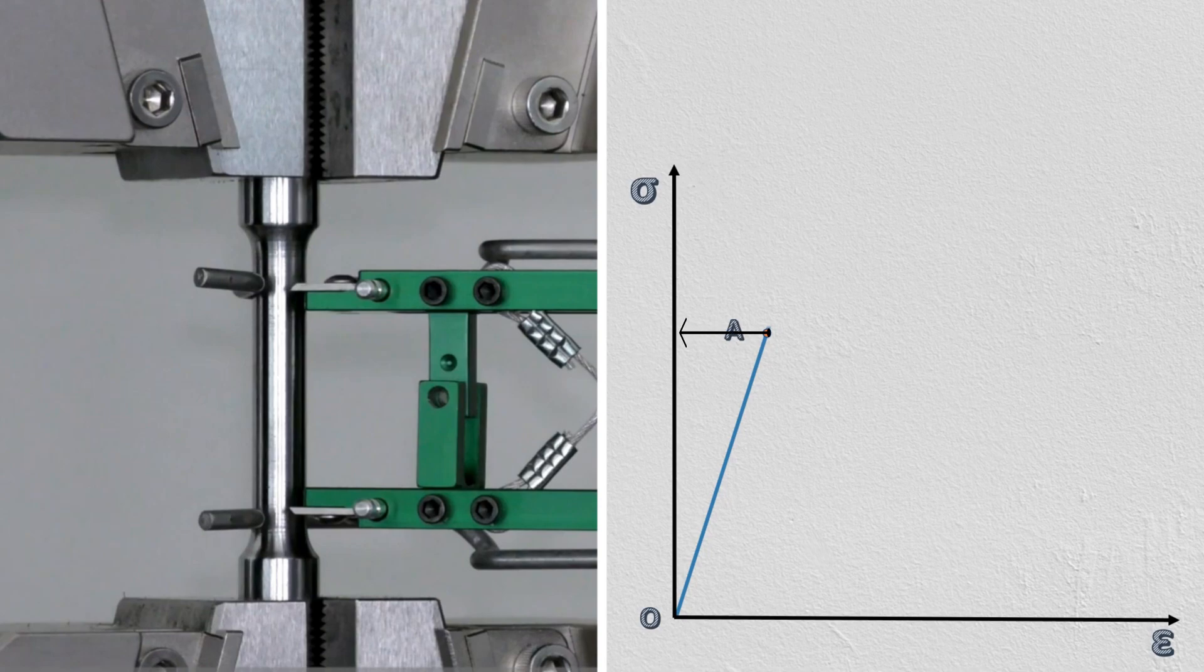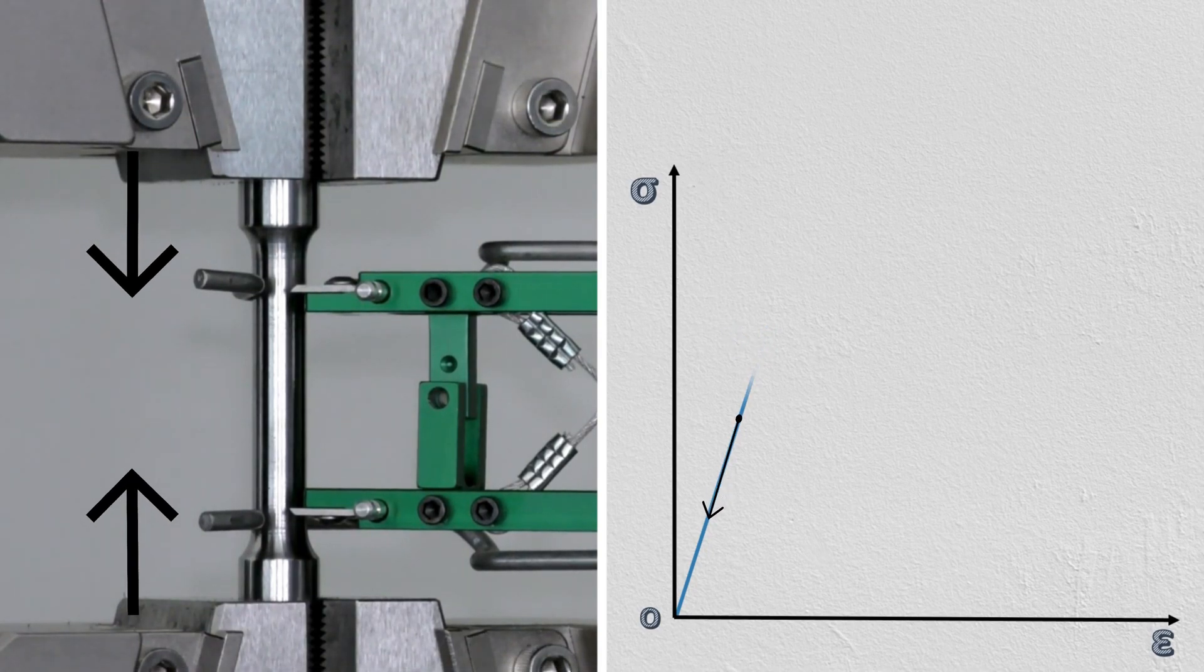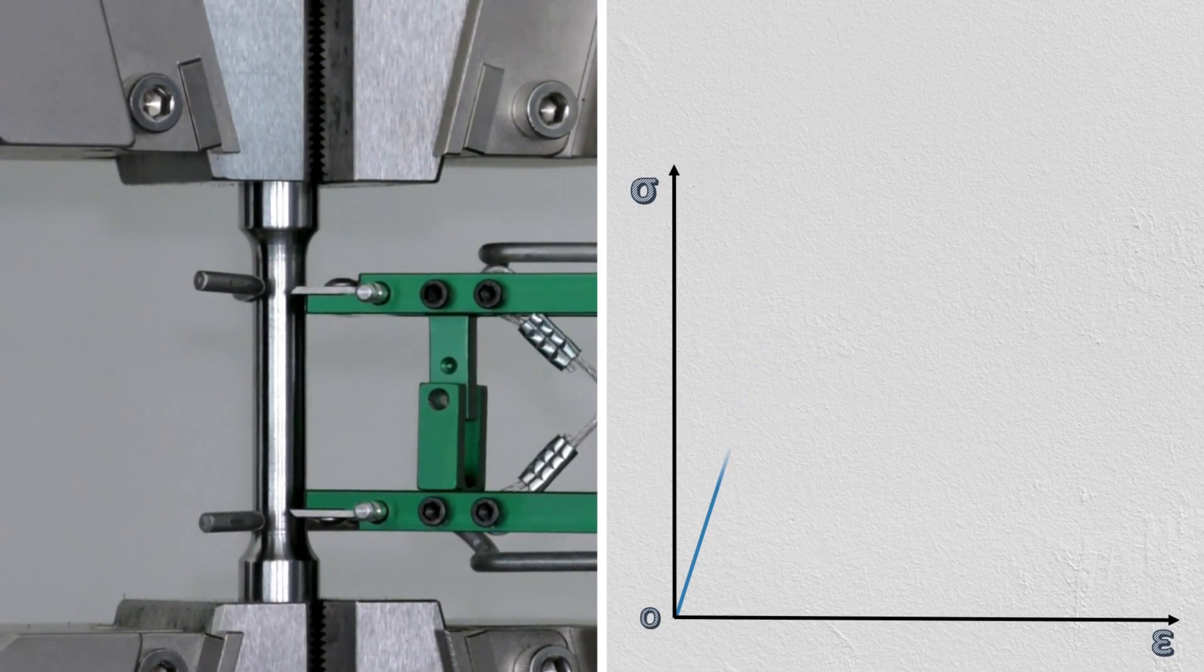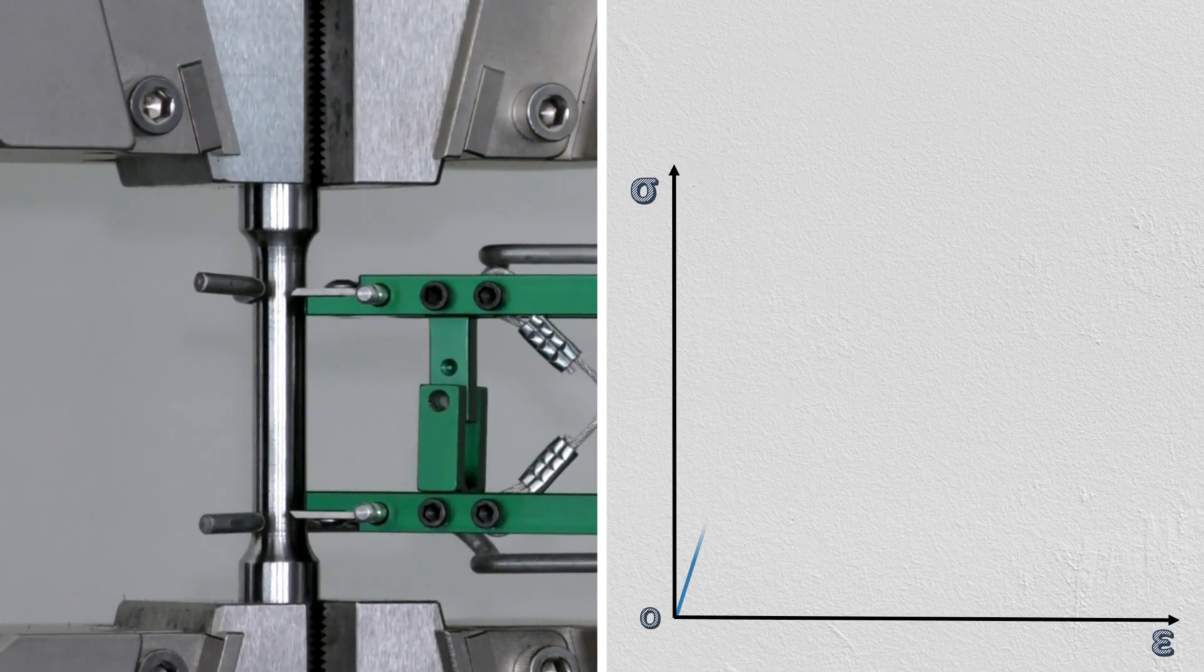The stress corresponding to point A is known as proportional limit. At this point A, if we remove this applied load, the object will restore its original shape without any permanent deformation.